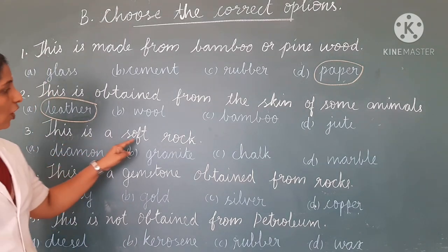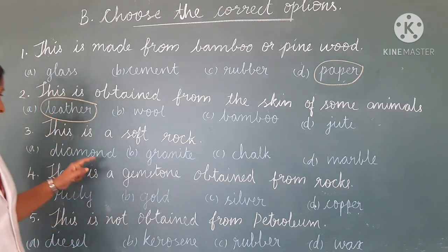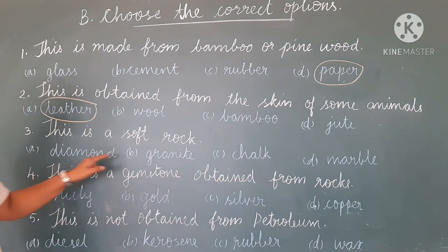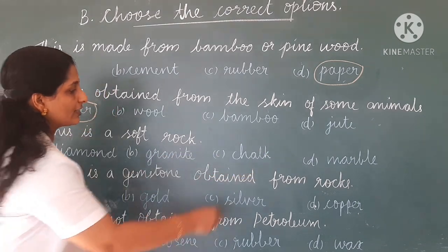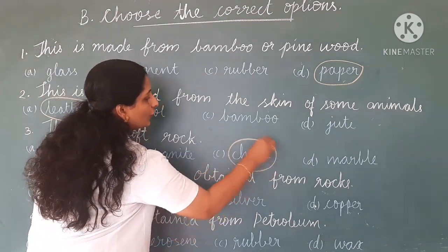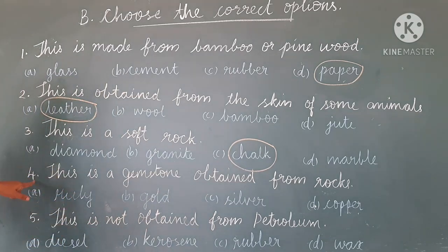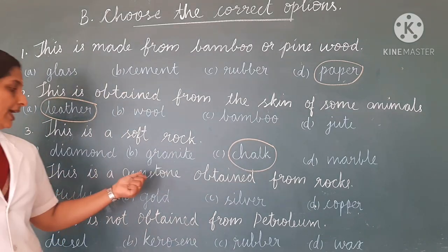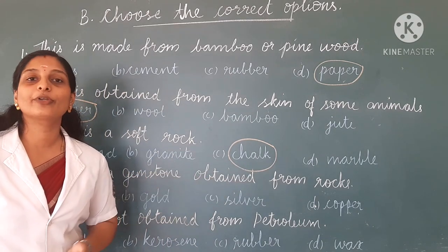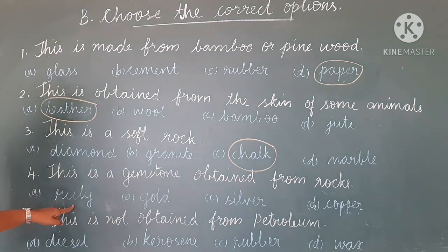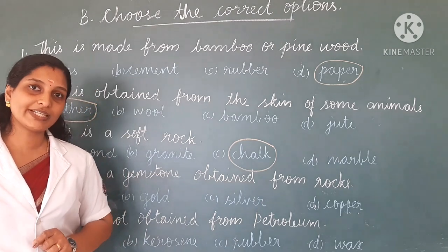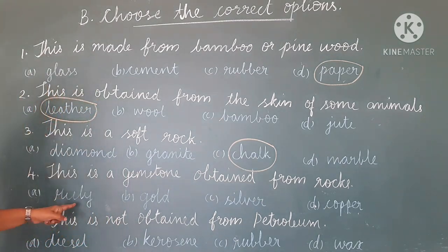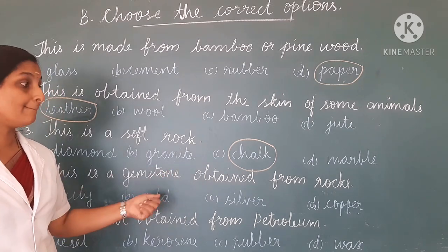Then the third question: this is a soft rock. Your options are diamond, granite, chalk and marble. Chalk is the soft rock. Then the fourth question: this is a gemstone obtained from rocks. Your options are ruby, gold, silver and copper. Which is the correct option? Yes — ruby is the gemstone. The other three — silver, gold and copper — are metals.